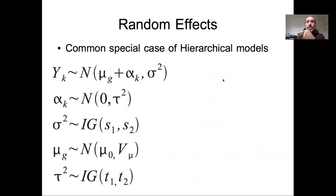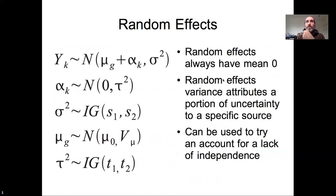Some key points about random effects models: One is that the random effects always have a mean of zero. The random effect variance is used to attribute some portion of variability to a specific source, and keeping with how we're using hierarchical models more generally, you can use them to account for this lack of independence among these different datasets.